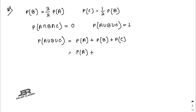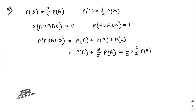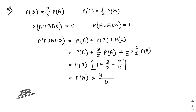Substituting: P(A) + (3/2)P(A) + (1/2)P(B) = P(A) + (3/2)P(A) + (3/4)P(A). Taking P(A) as common: 1 + 3/2 + 3/4 = (4 + 6 + 3)/4 = 13/4. So (13/4)P(A) = 1, therefore P(A) = 4/13.